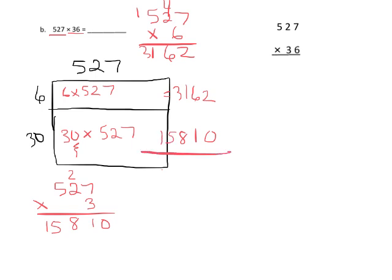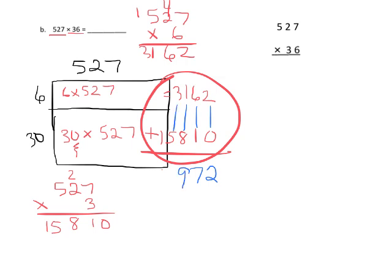So there's our two areas, and now what we would do is we would add these two areas up. And so 2 plus 0 is 2, 6 plus 1 is 7, 1 plus 8 is 9, 3 plus 5 is 8, and then 1. And so our answer is 18,972. Now that's using this visual model, the area model, essentially partial products. Another way we could call it is the distributive property.